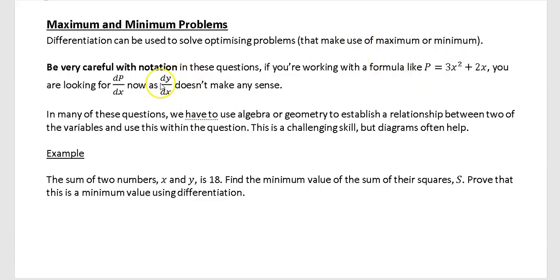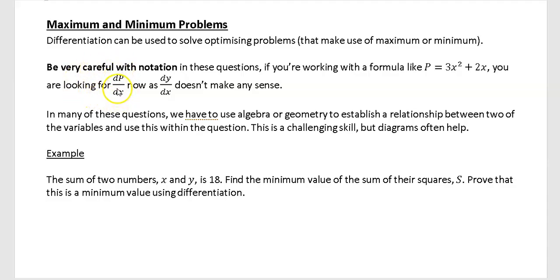Now if the question was slightly different — say a formula p is equal to 3x² plus 2x — you would be looking for dp/dx. So what dy/dx means is: differentiate y with respect to x. Here it's p, so you differentiate p with respect to x, giving dp/dx. You then put dp/dx equal to zero to find any maximum or minimums. We're going to work through an example of this now.